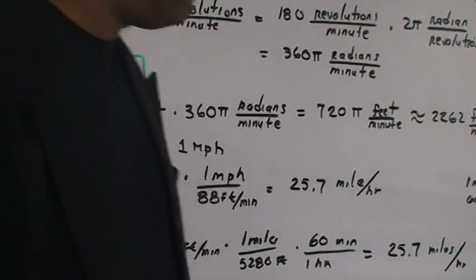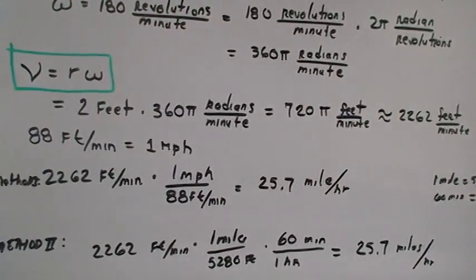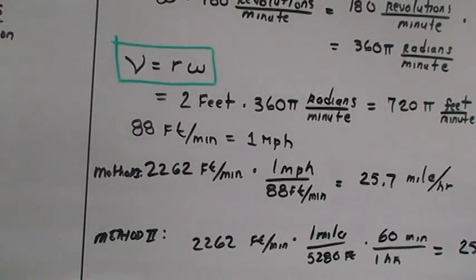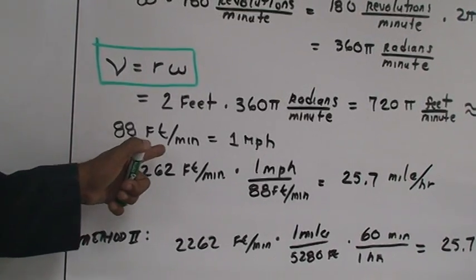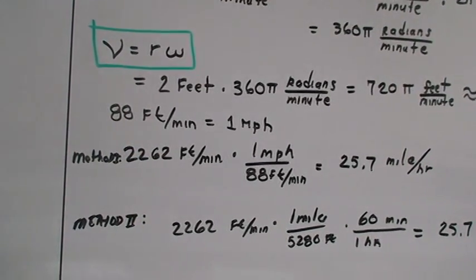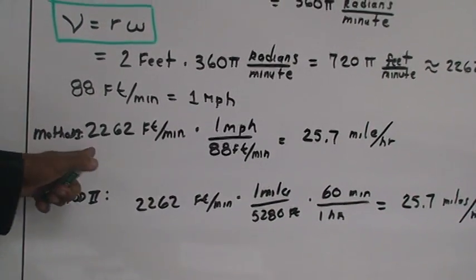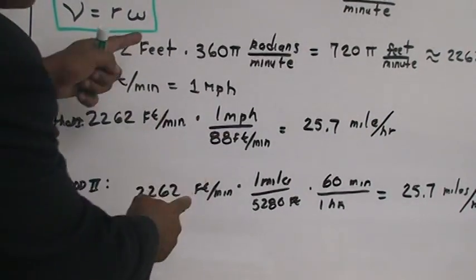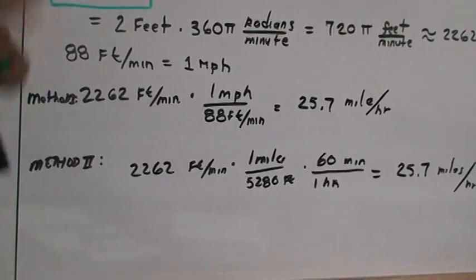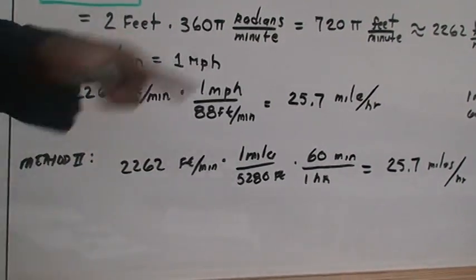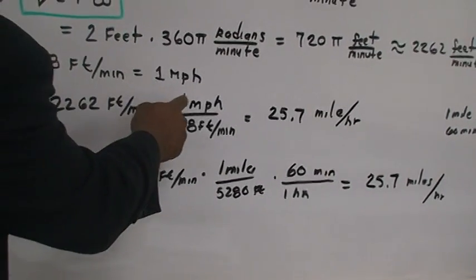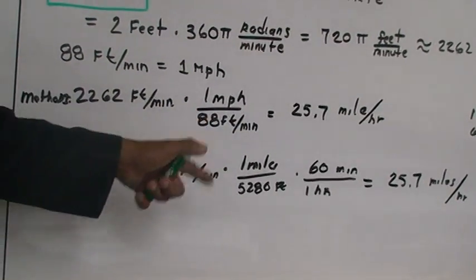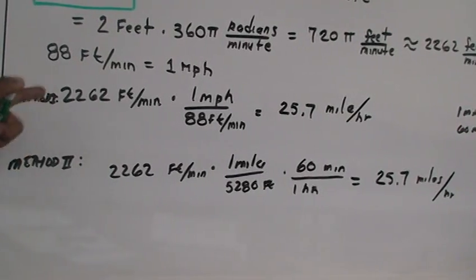So we want to take 2,262 feet per minute and convert it to miles per hour. Now let's look very closely. Conversion factor, you can do, there's two methods here I'm going to show you. 88 feet per minute is equal to 1 mile an hour. So let's plug that and convert that. We'll take 2,262 feet per minute and times it. Here's the conversion factor. Usually when you convert something, you want the top unit on top so the bottom unit can cancel with the other unit. And so 1 mile per hour will be on top because that's what we're looking for. And then 88 feet per minute will be in the denominator.